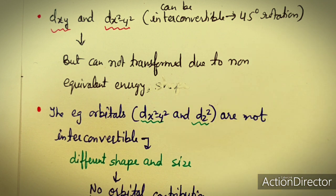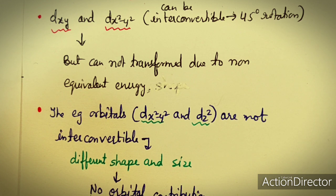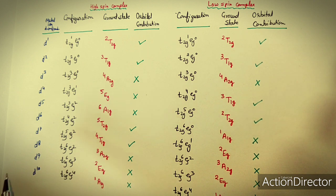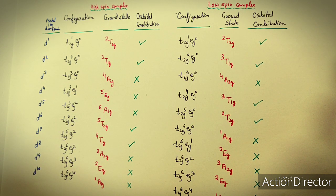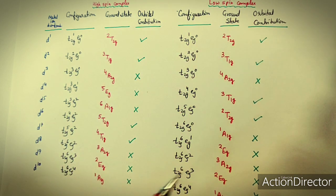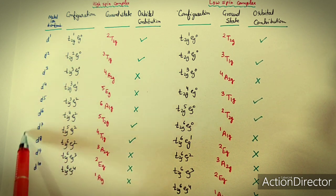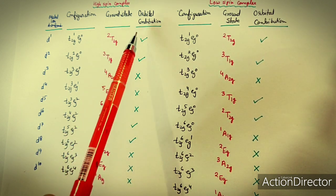Now we will use a table to understand which configurations show orbital contribution to the magnetic moment of octahedral complexes. The table covers both high-spin and low-spin octahedral complexes, showing the metal ion dn configuration, the configuration in terms of t2g and eg filling, the ground state term, and whether there is orbital contribution.